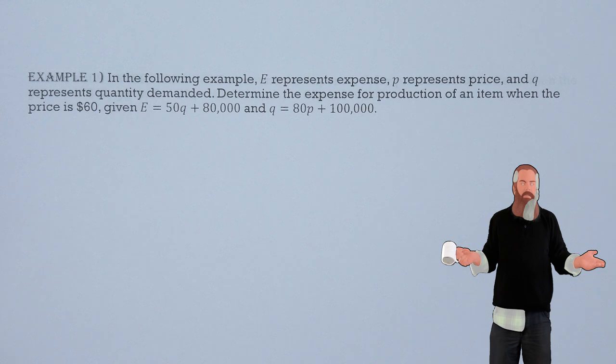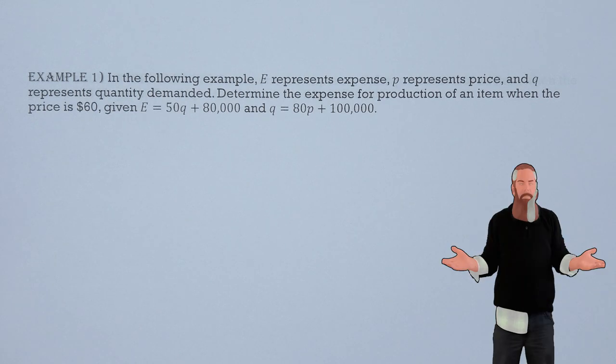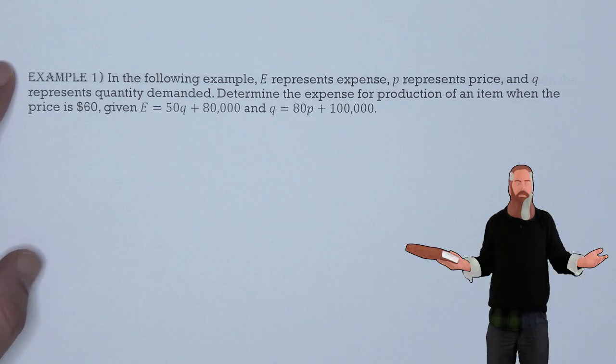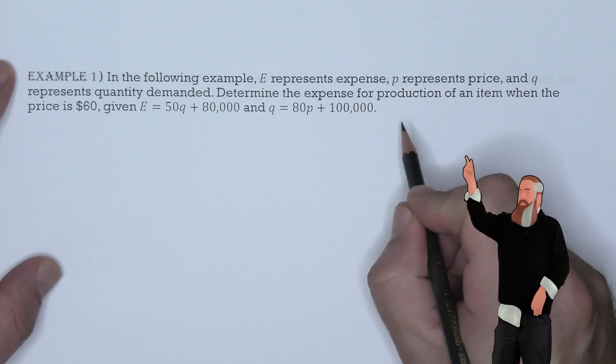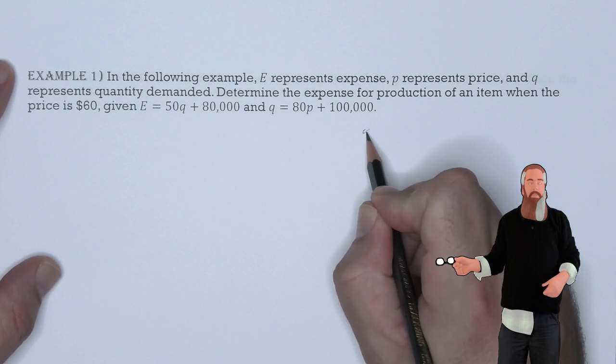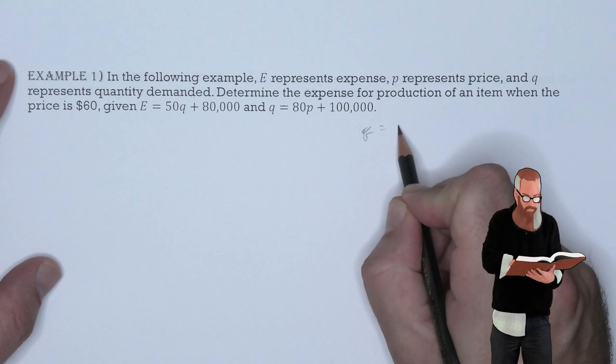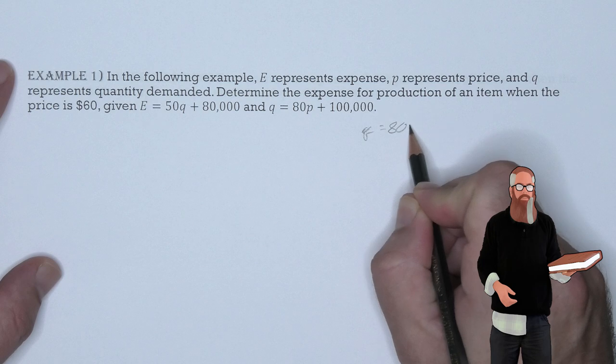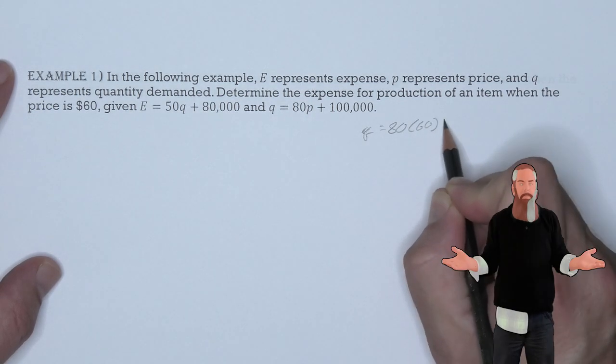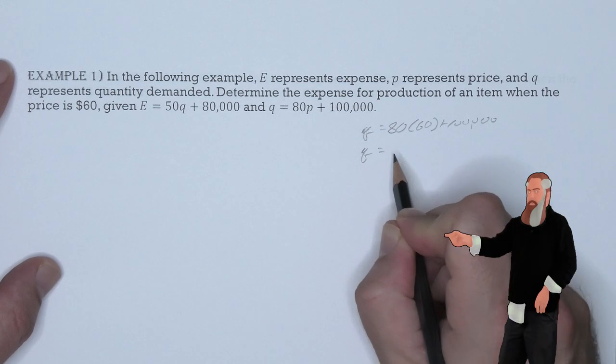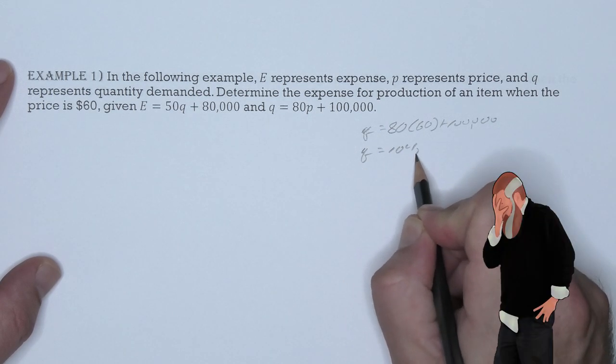The first method is to use the price to find the value Q that can be substituted into the equation E. This is to say, what happens to our Q equation when P is 60? We get Q is 80 times 60 plus 100,000. This gives us that Q is 104,800.